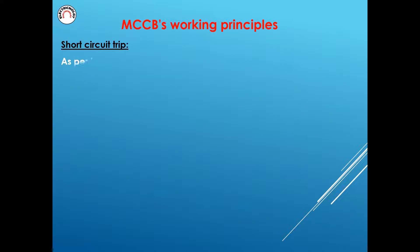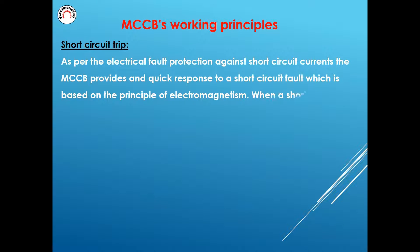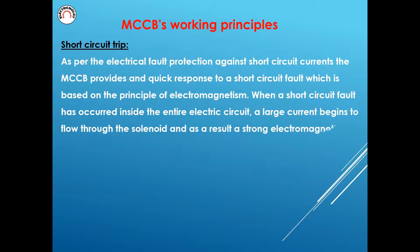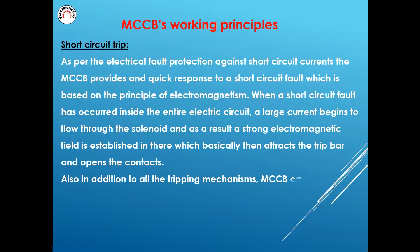Short Circuit Trip. For protection against short circuit currents, the MCCB provides a quick response to a short circuit fault, which is based on the principle of electromagnetism. When a short circuit fault occurs inside the electric circuit, a large current begins to flow through the solenoid and as a result a strong electromagnetic field is established, which attracts the trip bar and opens the contacts. In addition to all the tripping mechanisms, the MCCB can also be used as a device for manual disconnection.